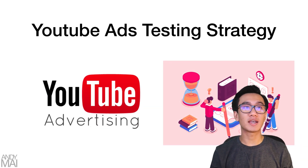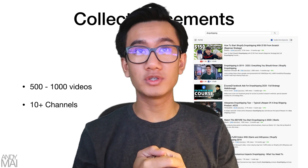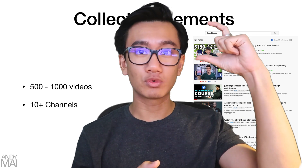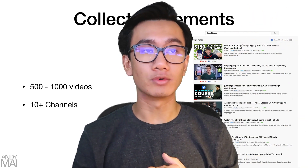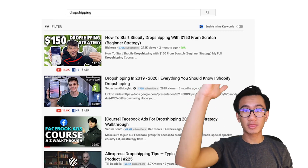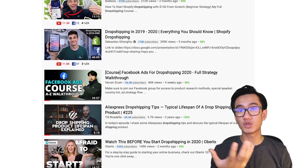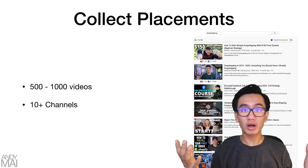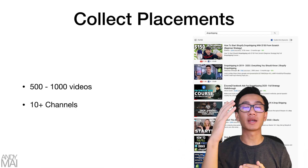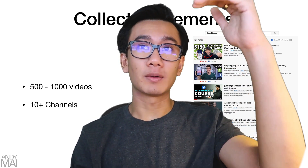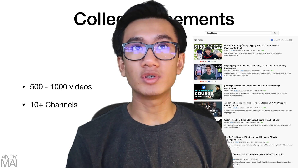So, YouTube ads testing strategy. What you're going to do is start by collecting placements. There are two types of placements: actual YouTube videos and YouTube channels. You just want to search your niche — for example, 'drop shipping' — and there'll be hundreds of drop shipping videos. If you're advertising in the cat niche, you can search 'cats,' 'cat training,' 'cat bed,' 'cat food,' and there's a bunch of videos.